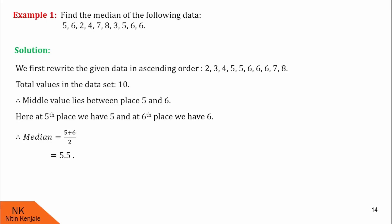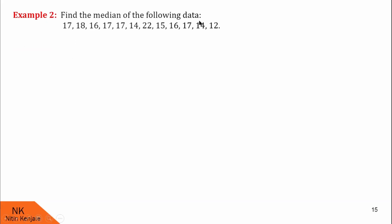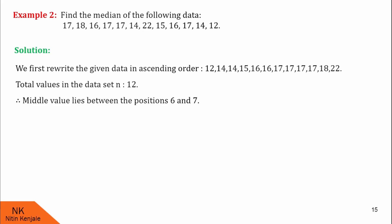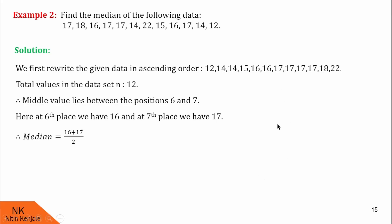Let us see another example. Once again, we are asked to find the median of the following data. Data is not arranged in ascending or descending order, so first we will arrange it in ascending order. After rewriting it in ascending order, the total number of values in the data set are 12 — again an even number. Therefore the middle value lies between positions 6 and 7. At sixth place we have number 16 and at seventh place we have number 17. Therefore median will be the average of these two numbers, that is 16 plus 17 by 2, so median would be 16.5.